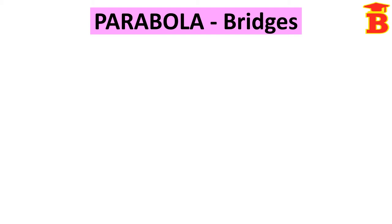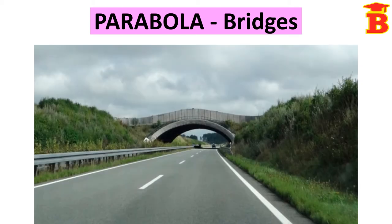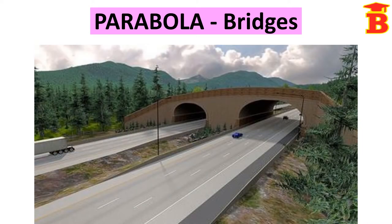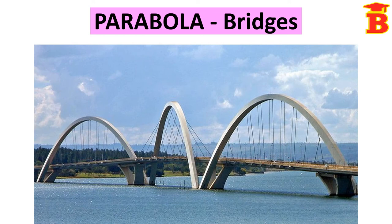First let us see some pictures. This bridge is in the shape of a parabola, and observe that this parabola is opened downward. The next picture shows a bridge with two openings, both in parabolic shape, also taken as opened downward. In this next bridge, the shape is in parabolic form and the parabola is also opened downward.